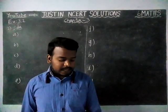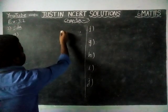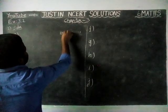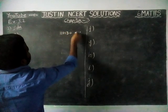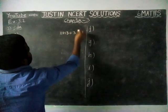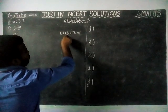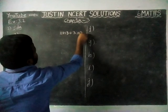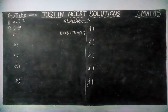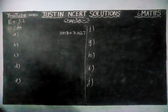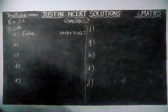First question, option A: the sum of 3 odd numbers is even. We are going to check with 3 odd numbers: 11 plus 13 plus 3. 11 plus 13 is 24, and 24 plus 3 is 27. The sum of 3 odd numbers is also an odd number, but the statement says even — so this statement is false.